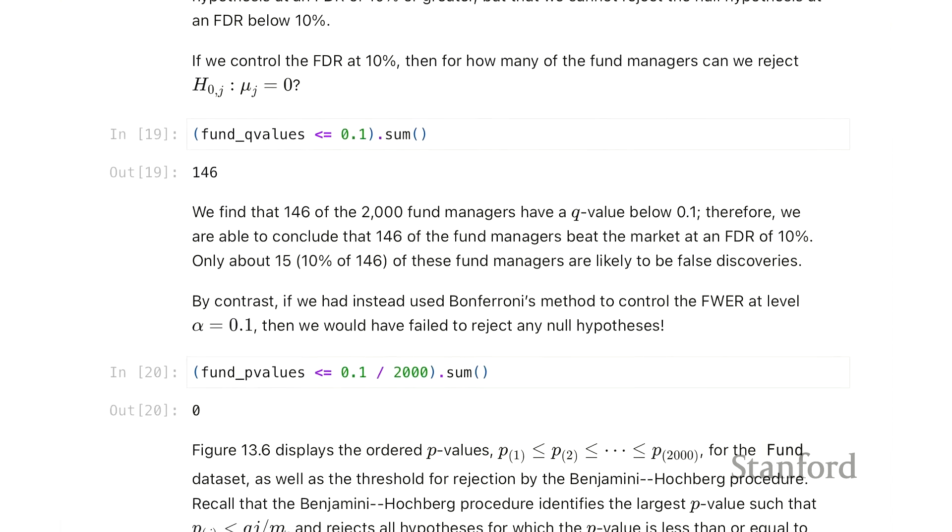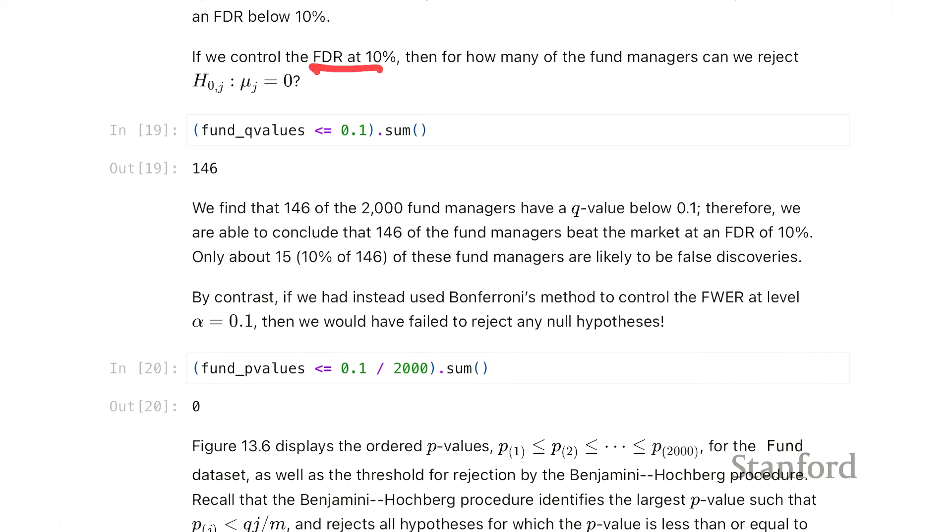Let's compare these two methods. Suppose we control false discovery at 10%. How many of our managers out of the 2,000 seem to be beating the market at a level of 10%? It seems there are 146 of them that beat the market according to this threshold of 10%. So we'd expect out of these 150, roughly 15 or so might be ones who can't really beat the market and are maybe guessing randomly or something like that.